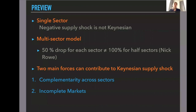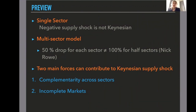Traditional policies like monetary policy easing and fiscal policy may be desirable, because if a supply shock has a demand component and generates demand shortages, these types of policies are helpful. However, traditional fiscal policy may be even less effective than in normal times, and social insurance is going to be an important component. Policies that incentivize preserving job matches are also important for long-term perspectives, to avoid disruption of productive matches with long-lasting consequences for recovery. In a single-sector macro model, COVID-19 can be represented purely as a negative supply shock. But once we introduce multiple sectors, a COVID-19 type shock may actually be a Keynesian supply shock.